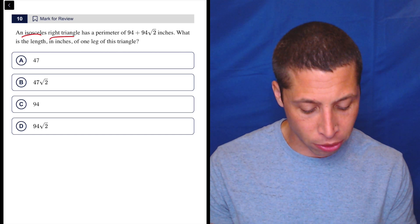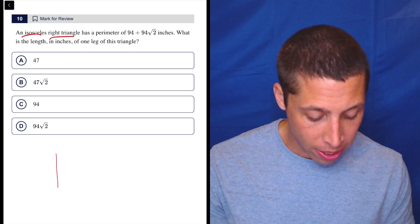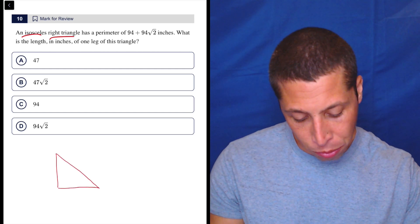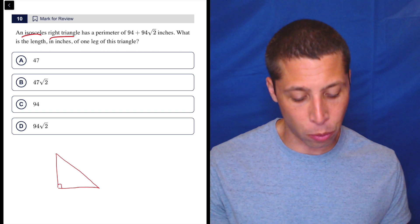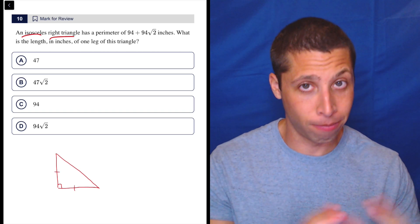We would need to draw this. I would draw this, I guess, this way, an isosceles right triangle. So that means that the two sides, or the two legs I should say, are going to be the ones that are congruent, right? So this and this are the isosceles triangle sides.